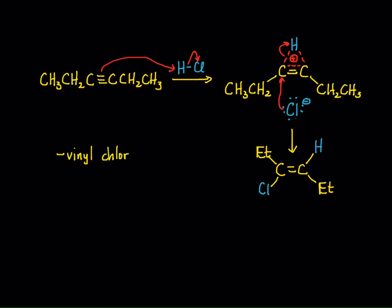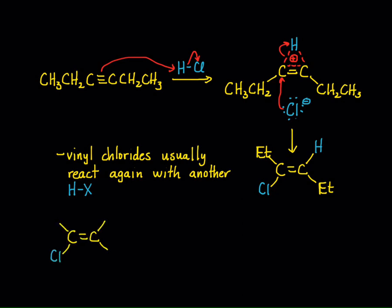Now, one of the things that we have to understand is, if we're taking an alkyne and reacting it with HCl and forming a vinyl chloride, usually vinyl chlorides are still fairly reactive with HX and can undergo another addition reaction because I still have a pi bond. So, I get my vinyl chloride reacting with HCl, and what's going to happen?